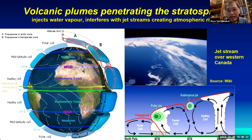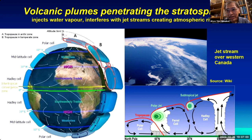How does a volcanic plume from a sub-aerial eruption — an eruption on land — affect climate when it penetrates the stratosphere? It will inject water vapor; most volcanic plumes, because they are hot, carry lots of moisture. This will interfere with the jet stream and normal circulation, and may recreate atmospheric rivers. Here you can see a picture of one over Canada — the western part of Canada — what is known as the Pineapple Express. Because of this interference, climate variability may take place.